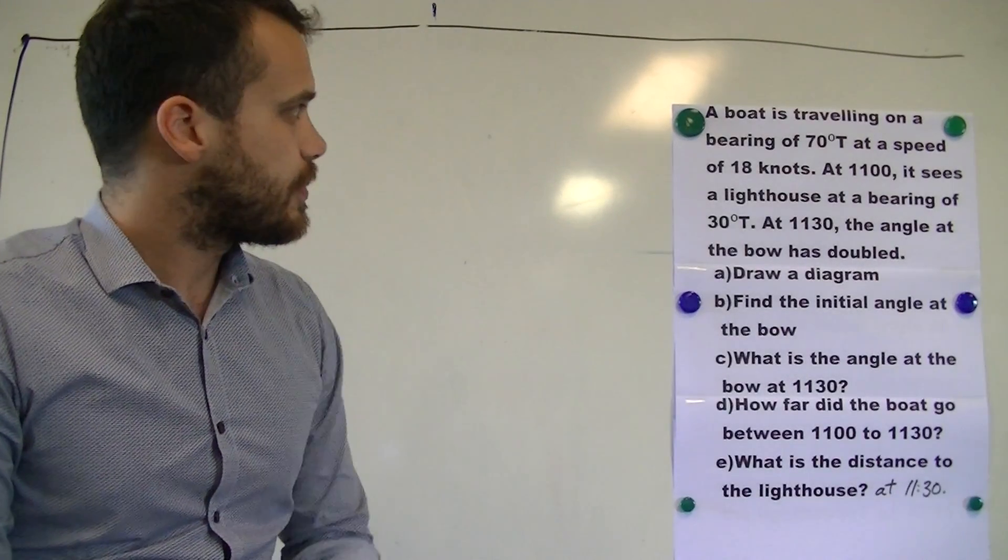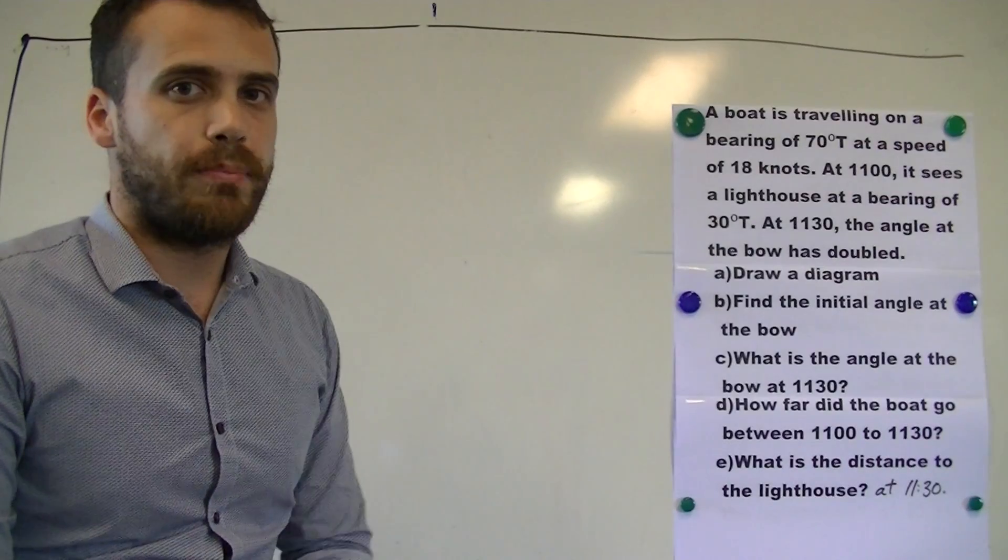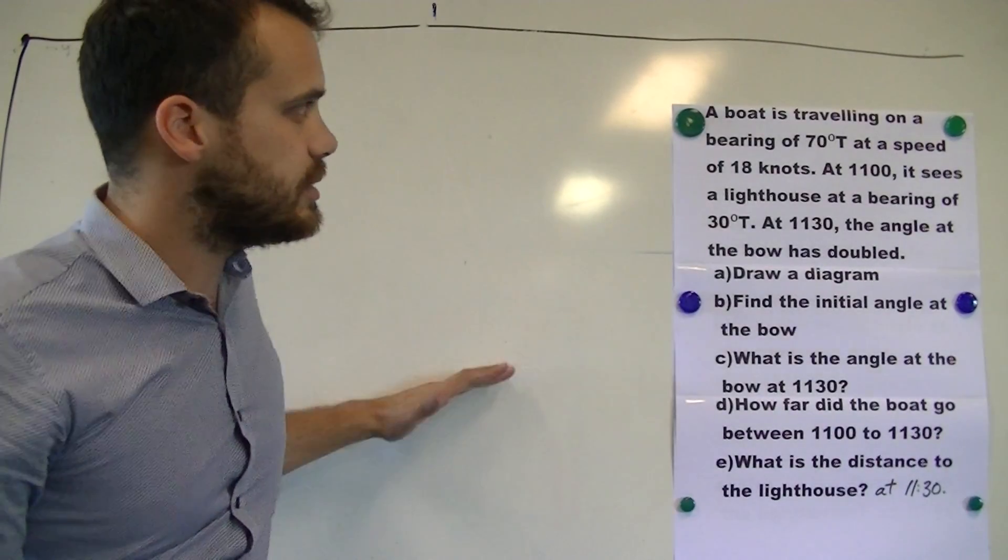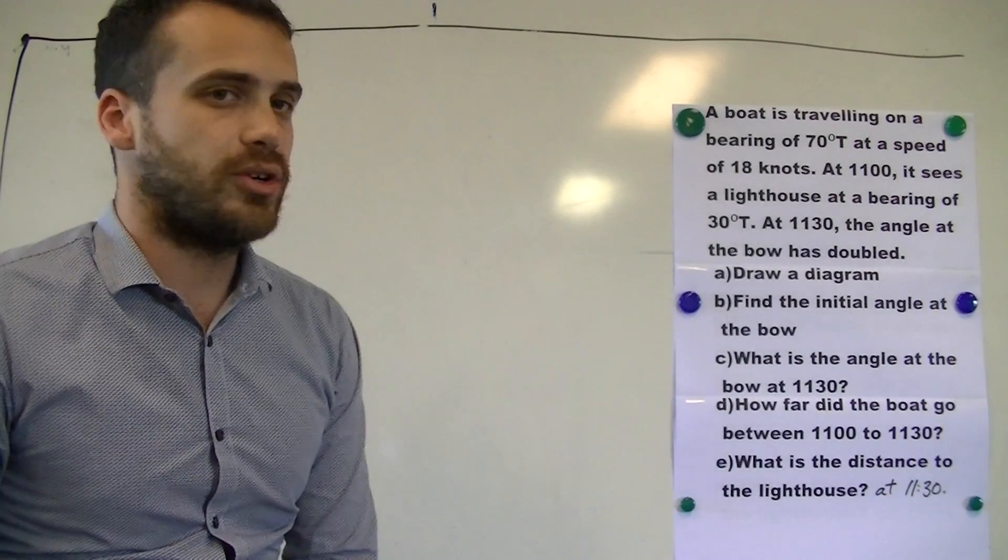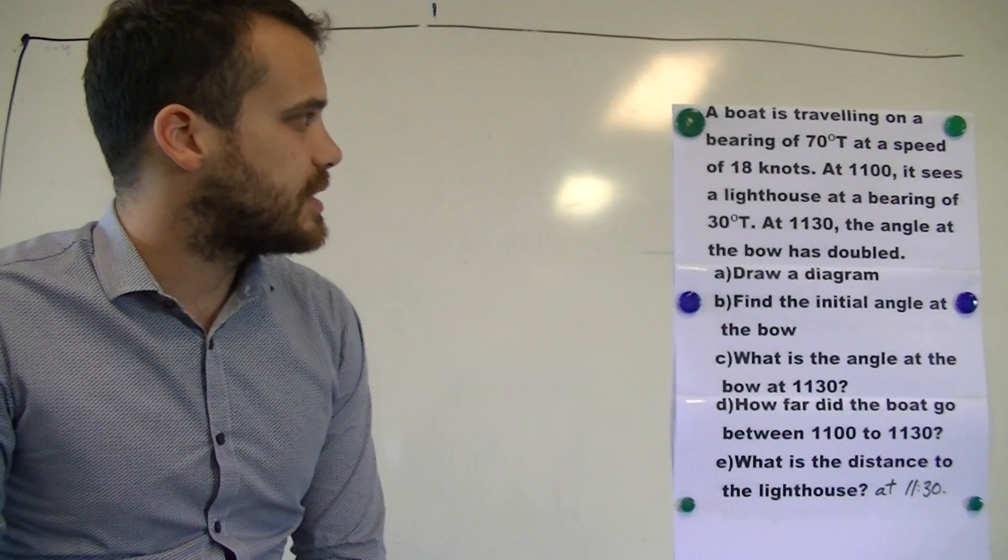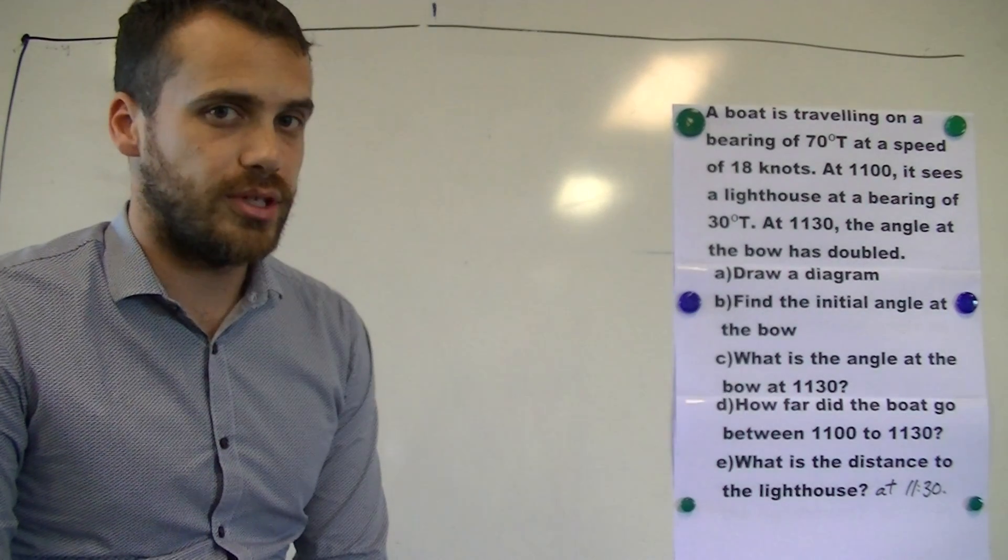Let's go through the question. A boat is travelling on a bearing of 70 degrees true, so something like this, at a speed of 18 knots.